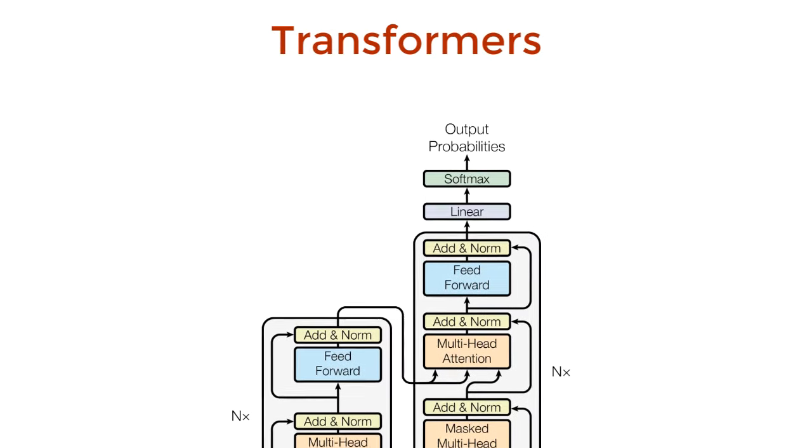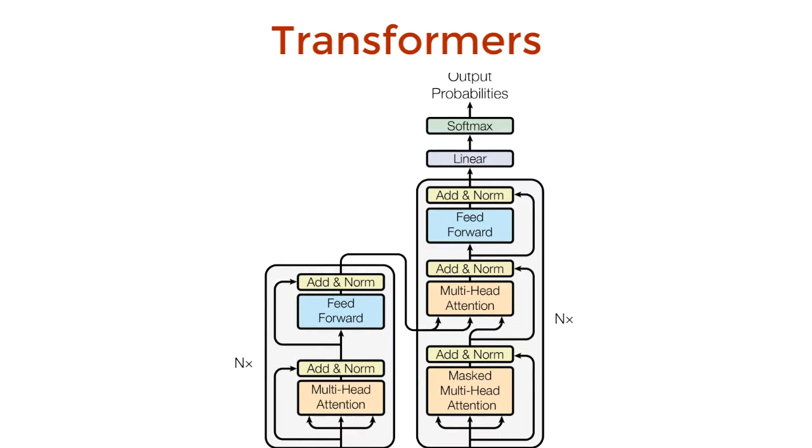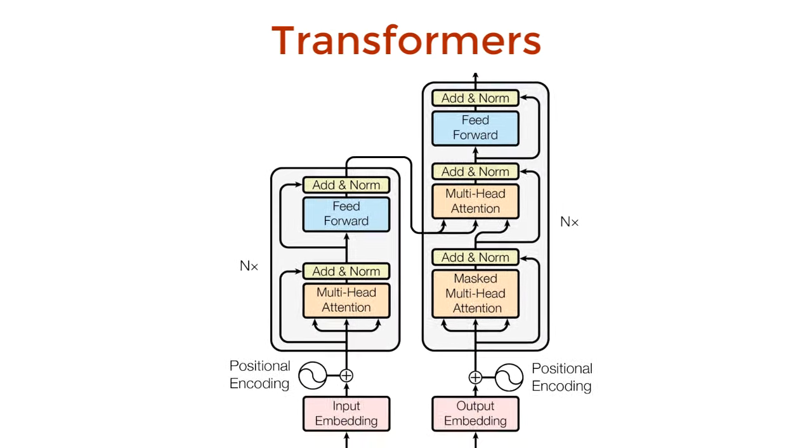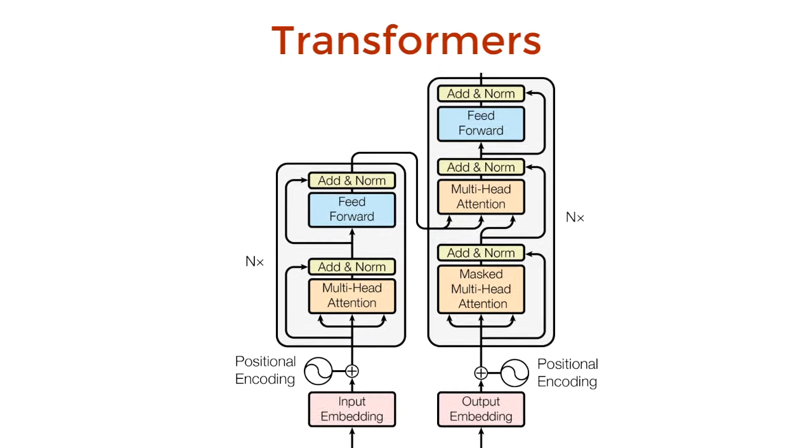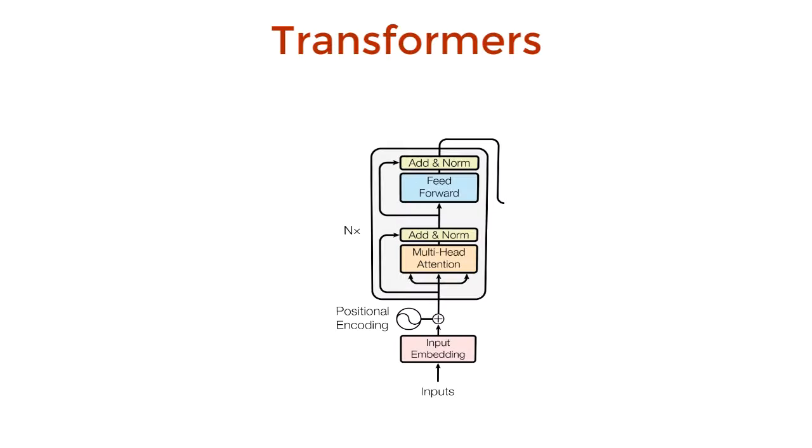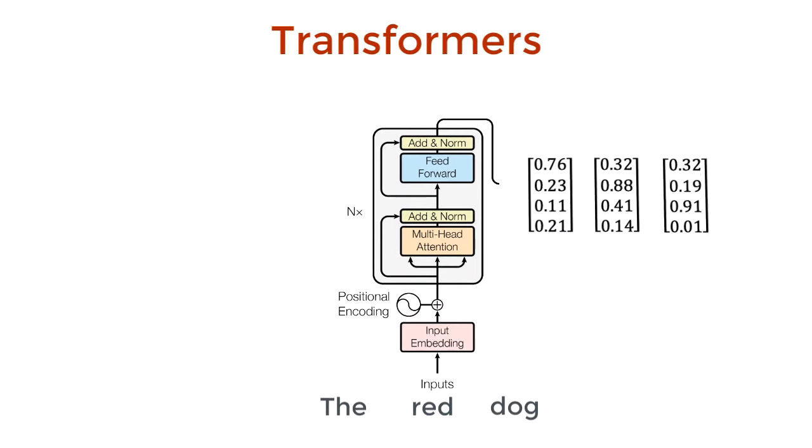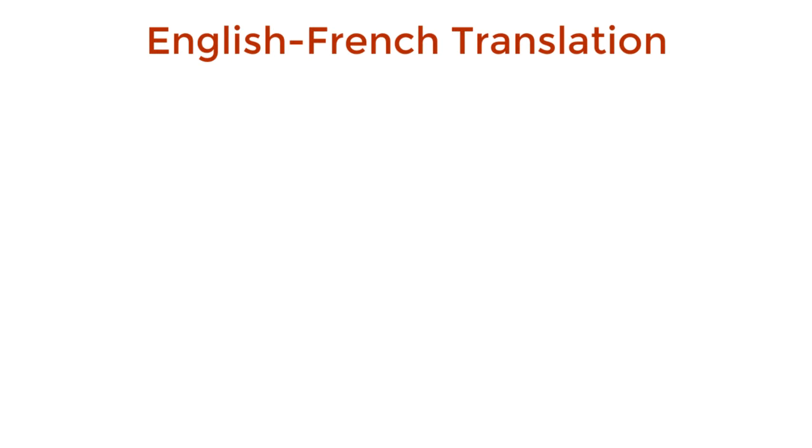In 2017, the transformer neural network architecture was introduced. The network employs an encoder-decoder architecture much like recurrent neural nets. The difference is that the input sequence can be passed in parallel. Consider translating a sentence from English to French. I'll use this as a running example throughout the video.